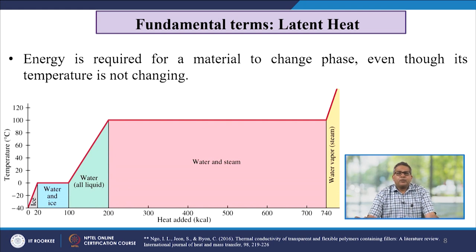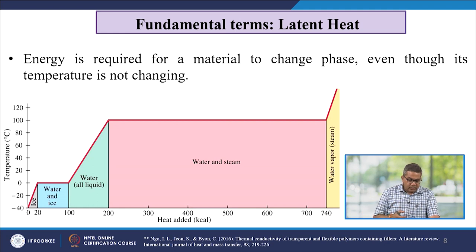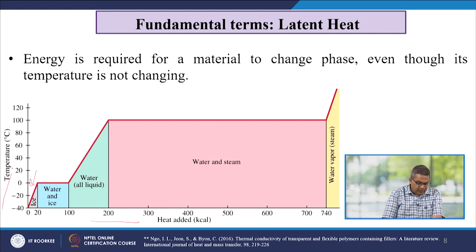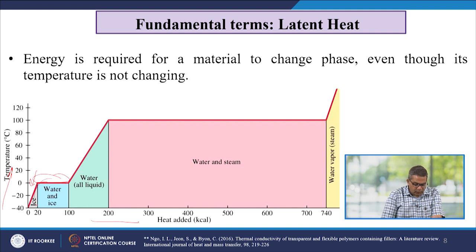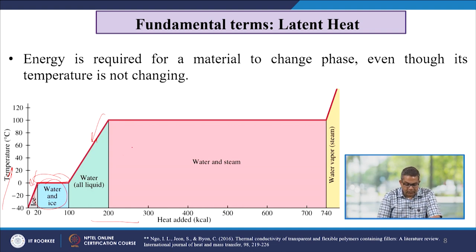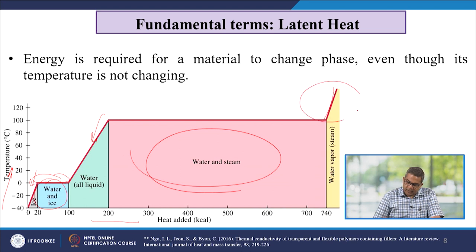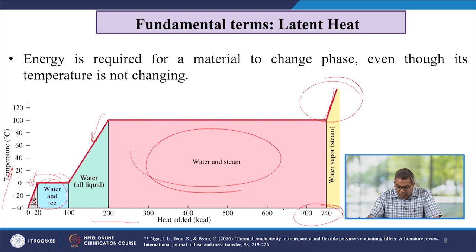Latent heat is an important phenomenon — it is the energy required for a material to change phase even though its temperature is not changing. For water: starting from ice, at 0°C the temperature remains constant while heat is absorbed; after about 100 kcal, all ice converts to liquid water. Raising temperature further to 100°C gives water and steam, and adding more heat yields saturated and then superheated steam.